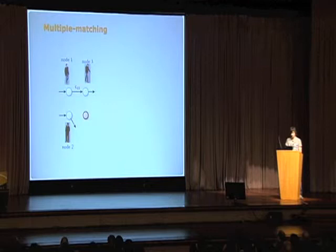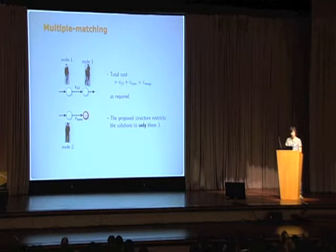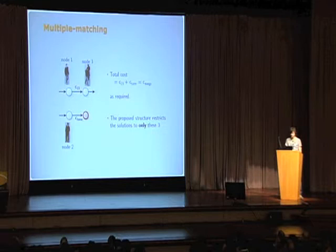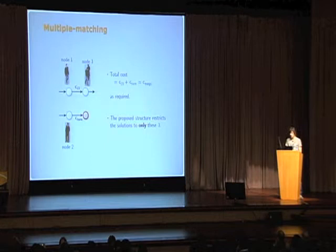I will now show that this structure solves the problem and encodes all three hypotheses. The first is where node three and node one have the same target, with the correct cost. The second hypothesis: node two and three are the same target. And finally, the third hypothesis — a normal link and termination — where the total cost is C-merge, as required. Importantly, the proposed structure actually restricts the solutions to only these three, because otherwise you could get inconsistent solutions that do not represent any physical hypothesis you want to model.